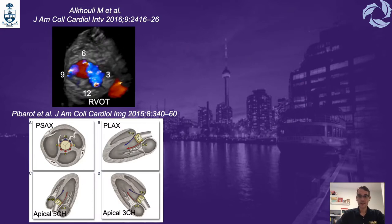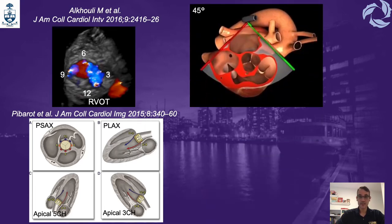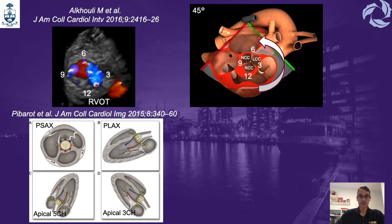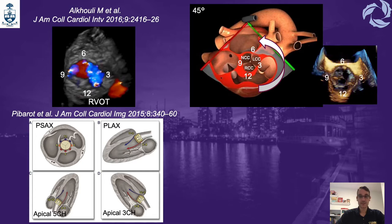This clock guidance was defined by Al-Hulaimi and colleagues for prostheses and by Pibaroth and colleagues for TAVR. Starting with the short axis view of the aortic valve at 45 degrees, equivalent to the parasternal short axis by transthoracic echo, the 12 o'clock position is where the right coronary cusp is, and the 6 o'clock position is between the non and the left. To translate that into 3D, these are the equivalent positions.